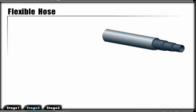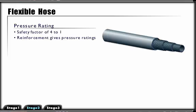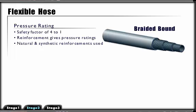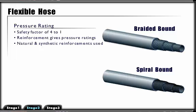Hoses are usually pressure rated with a safety factor of 4 to 1. Different types and amounts of reinforcement give the hose specific pressure ratings. The reinforcement may be in natural or synthetic fiber or metal wire, and may be braided or spiral bound.